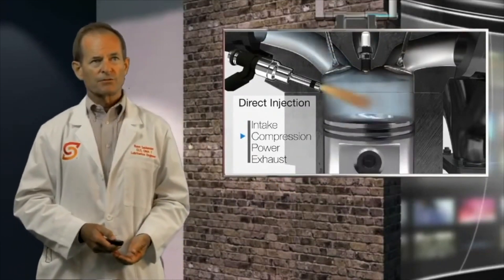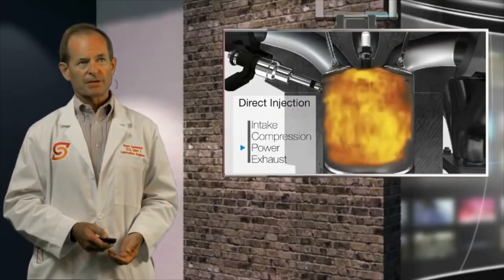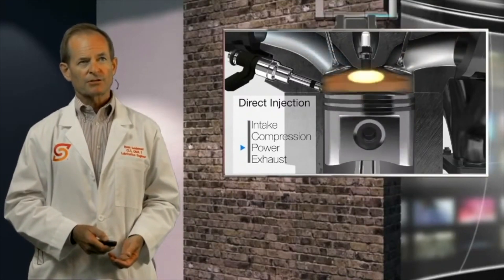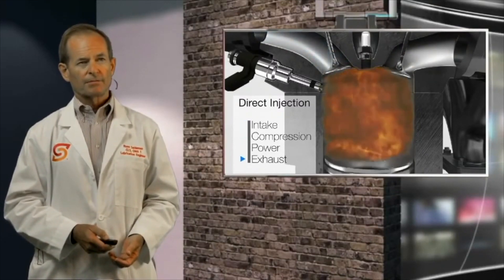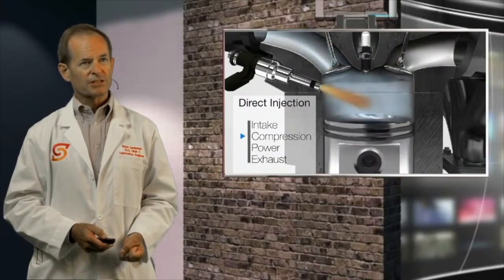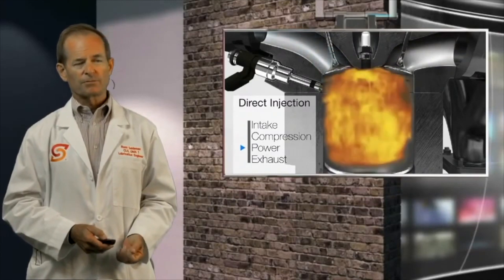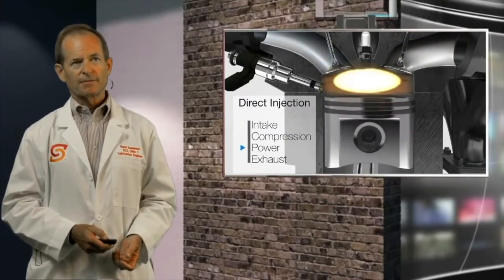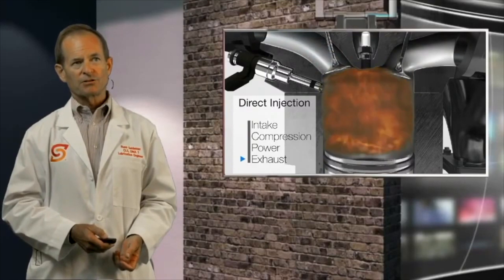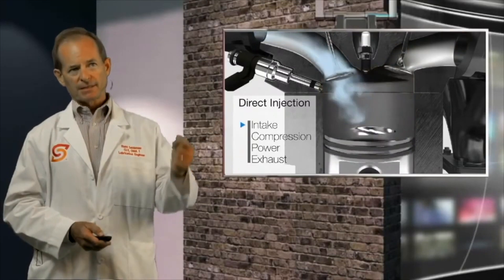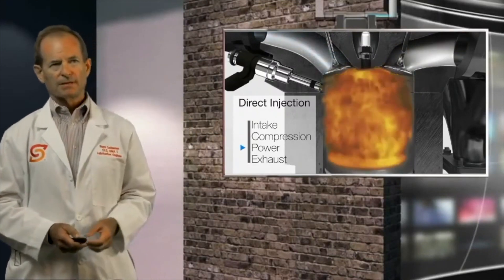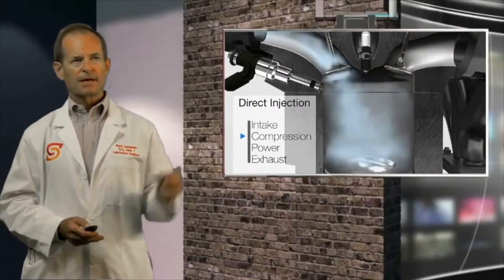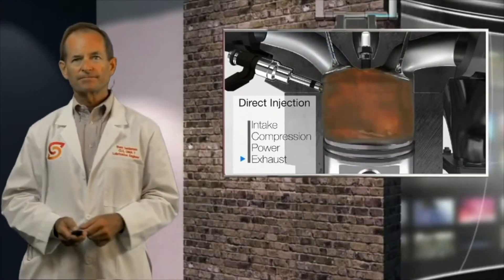What's coming in on the intake is just air, and the injector blows the fuel in. The spark plug lights it off, and you get your power stroke. We're injecting immediately into the cylinder, not ahead of the intake valve.